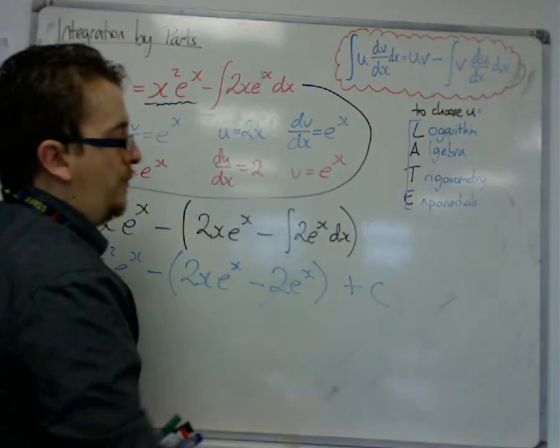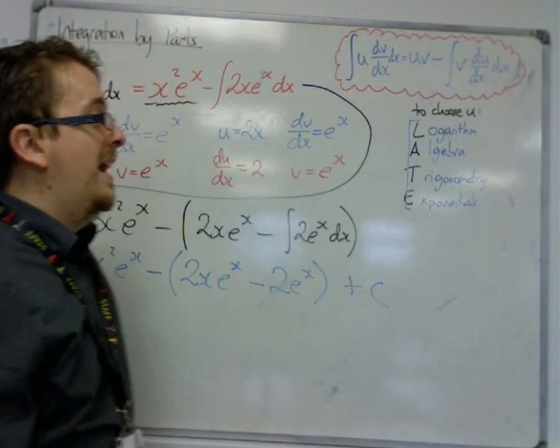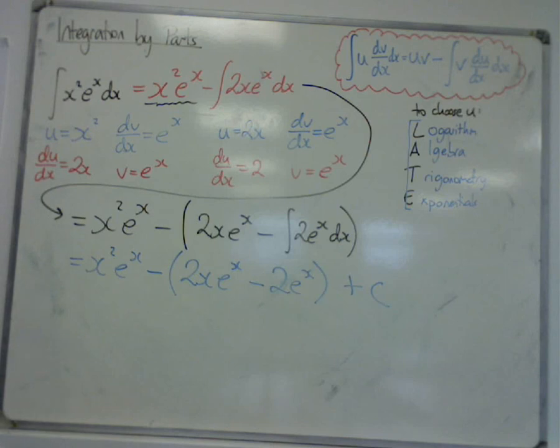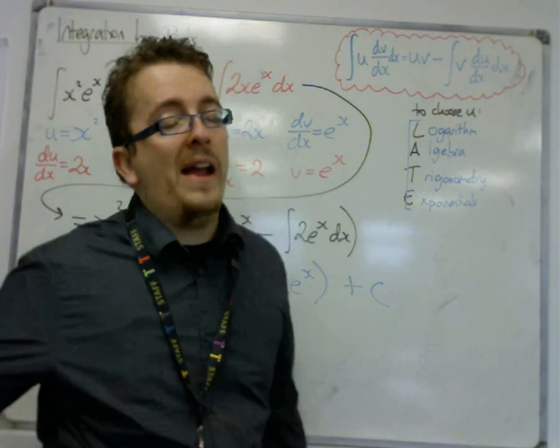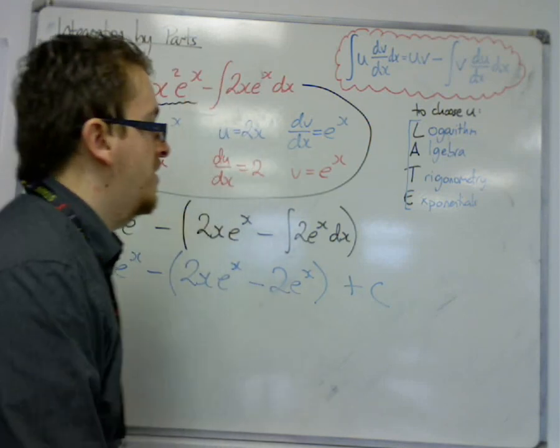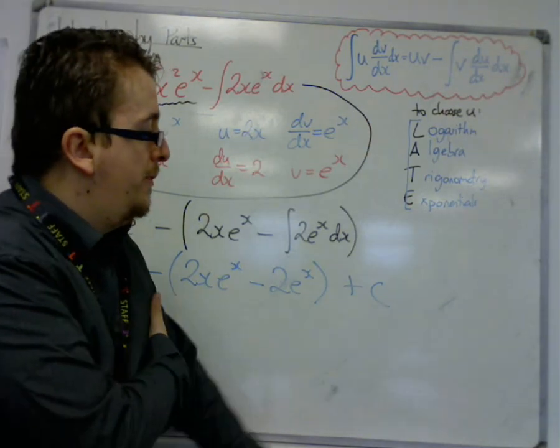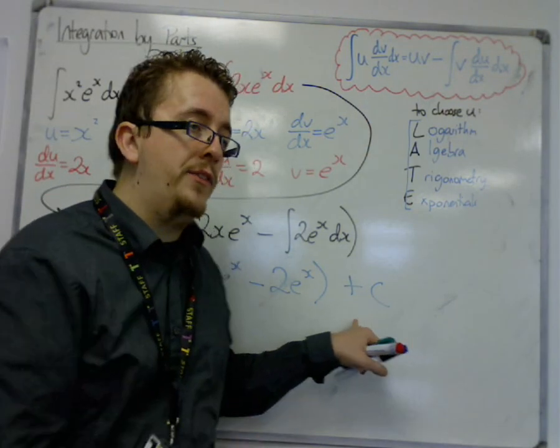You could put it in the bracket as plus c, and when you multiply through, you'll have a take away c. When you're thinking about a constant of integration, a take away c and a plus c are exactly the same thing, because c can be positive or negative. So it doesn't really matter, but in general terms, we maintain that it would be a plus c.